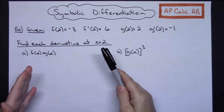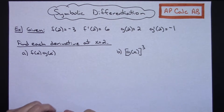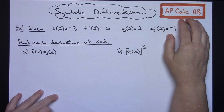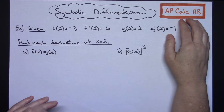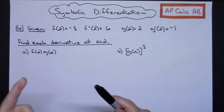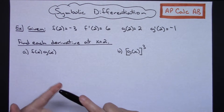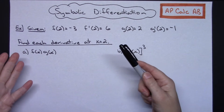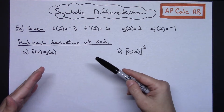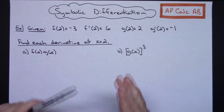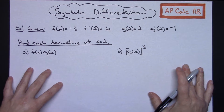In this video, I'm going to take a look at some symbolic differentiation, and I would want to point out that this is a topic that could be easily encountered in the AP Calc AB exam. I am assuming that you already know product rule, quotient rule, and chain rule — you've done a lot with differentiation up to this point, so the only thing I'm going to focus on is symbolic differentiation in this video.